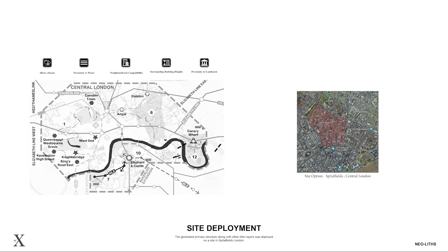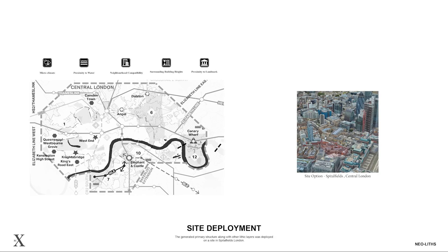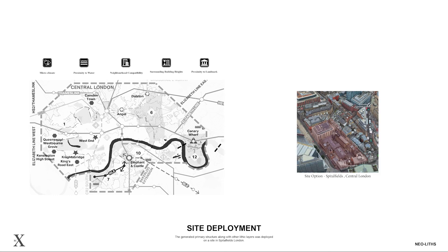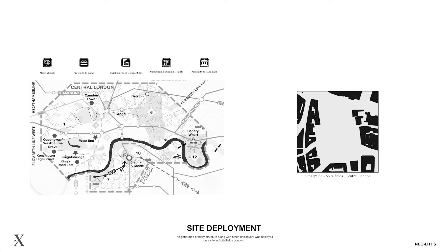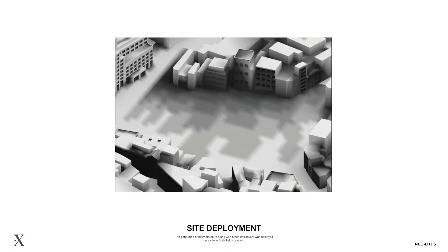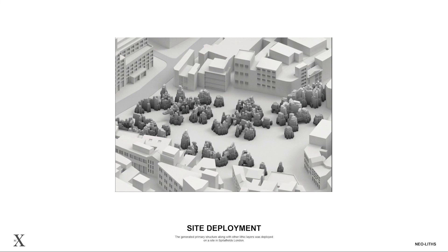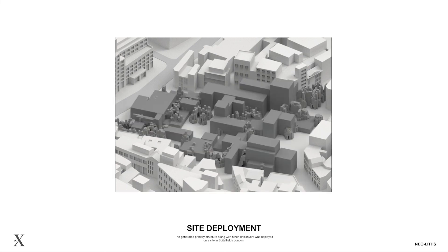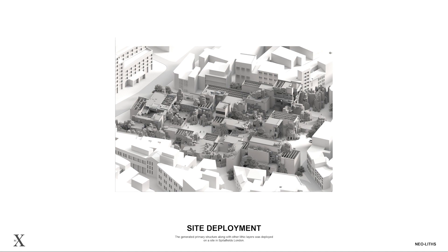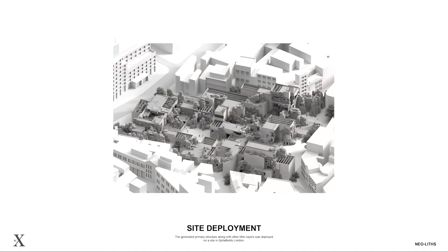According to the London Plan of 2021, we selected a site in central London in the area of Spa Fields. This area has a mix of high-rise and mid-rise buildings. We utilize our latest drawing tool, which allows us to input a desired floor plan layout and obtain back a grayscale depth map to generate a primary structure with the desired characteristics.